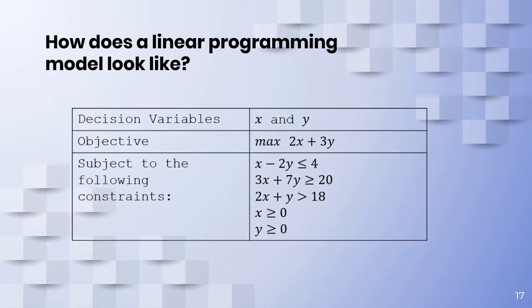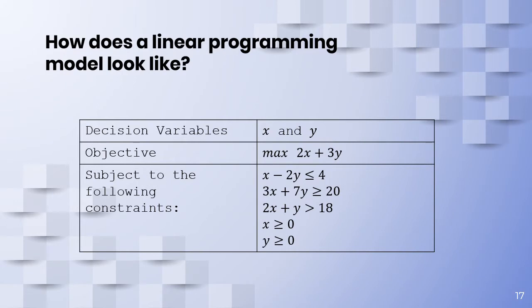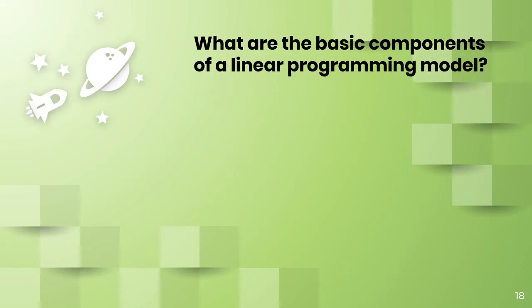A linear programming model looks like this - you can have a table that contains some important parts. It is important to identify the parts of a linear programming model because we have to transform the word problems into linear programming models.